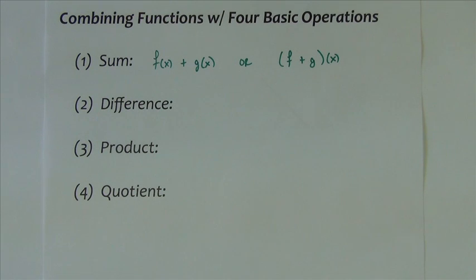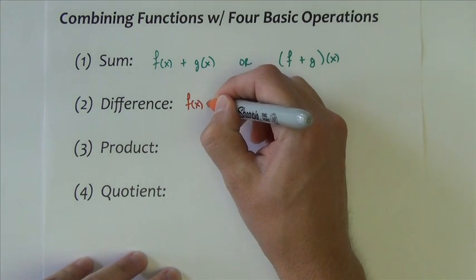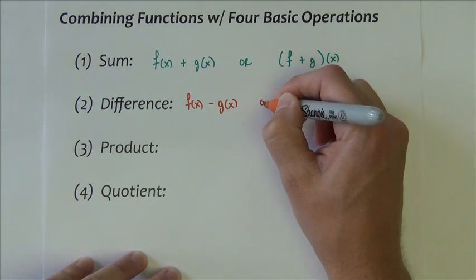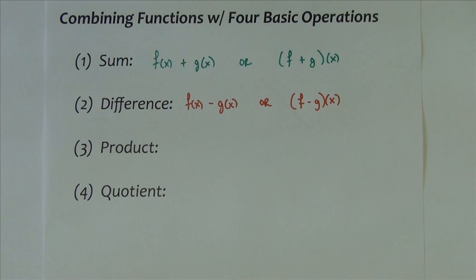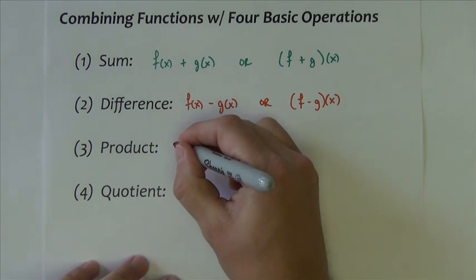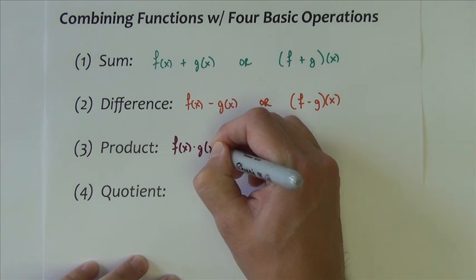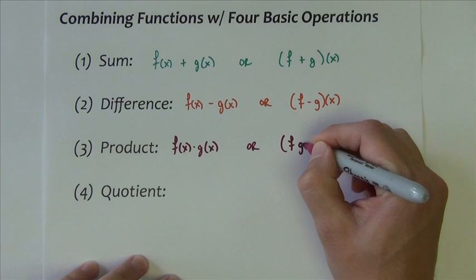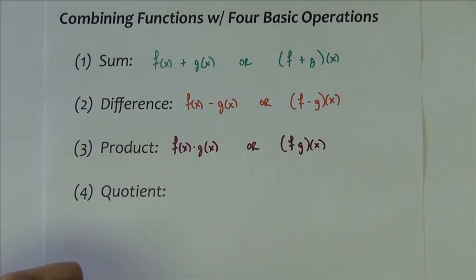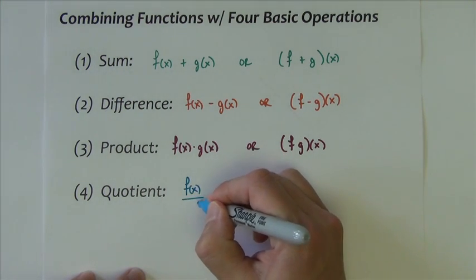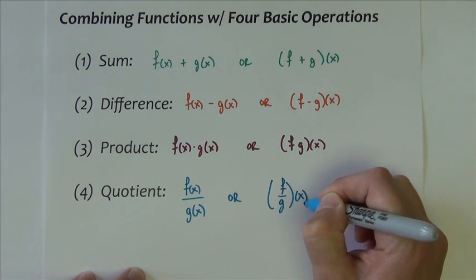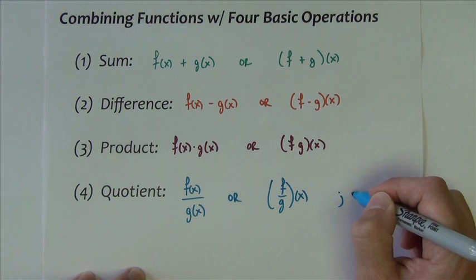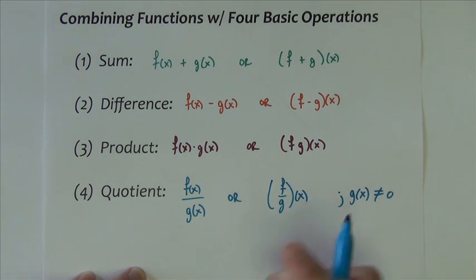For difference, you're going to see a very similar look. You're going to see f of x minus g of x, or you might see f minus g of x like that. For product, you're going to see f of x times g of x, or you might see it f g of x that way. And for quotients, you're going to see f of x divided by g of x, or f divided by g of x. For both instances, provided that g of x is not equal to zero.